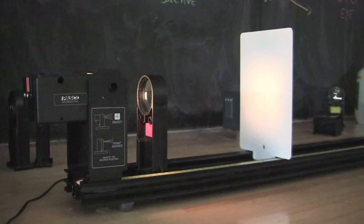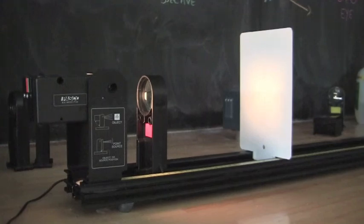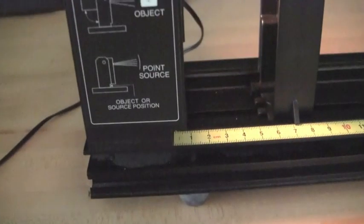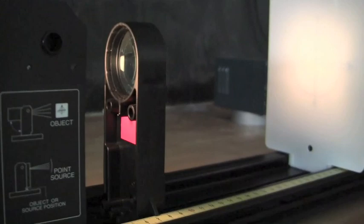To measure the focal length of a lens, this is what we'll use. We'll place a light source at the zero mark on our set of rails and a screen 30 cm away. We'll measure the focal length of the red lens by using it to form an image of the light source on the screen.